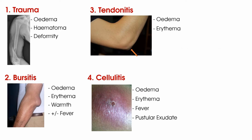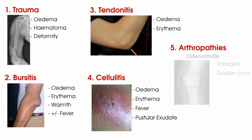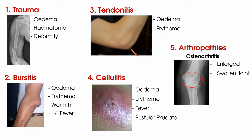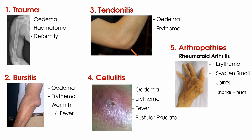Finally, number five is arthropathies, which can be categorised into osteoarthritis, rheumatoid arthritis and crystal arthritis. For osteoarthritis, you may expect to find an enlarged swollen joint, and in progressed cases you may find hard swelling when you palpate the joint. With rheumatoid arthritis, you may find redness or swelling at the joint you are assessing, as well as other joints, particularly the hands and the feet.